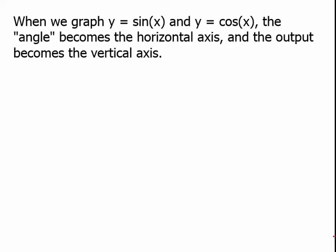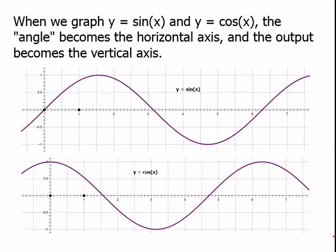When we graph y equals sine x and y equals cosine x, the angle becomes the horizontal axis and the output becomes the vertical axis. The graph of sine x starts at 0, increases toward pi over 2, decreases back to 0 at pi, becomes negative through 3 pi over 2, and returns to 0 at 2 pi. Cosine starts at its maximum of 1, decreases to 0 at pi over 2, goes down to negative 1 at pi, comes back to 0 at 3 pi over 2, and increases to 1 again at 2 pi.